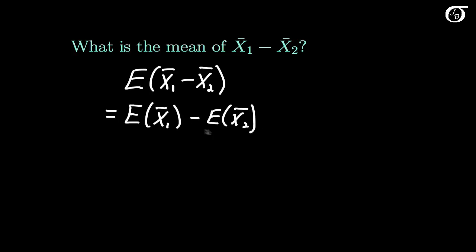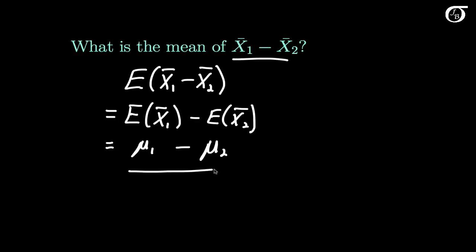The expectation of X1 bar is simply the mean of the population from which we are sampling, in other words mu1, and similarly mu2 for X2 bar. So on average, X1 bar minus X2 bar is equal to the difference in the population means. In other words, the difference in sample means is an unbiased estimator of the difference in population means.